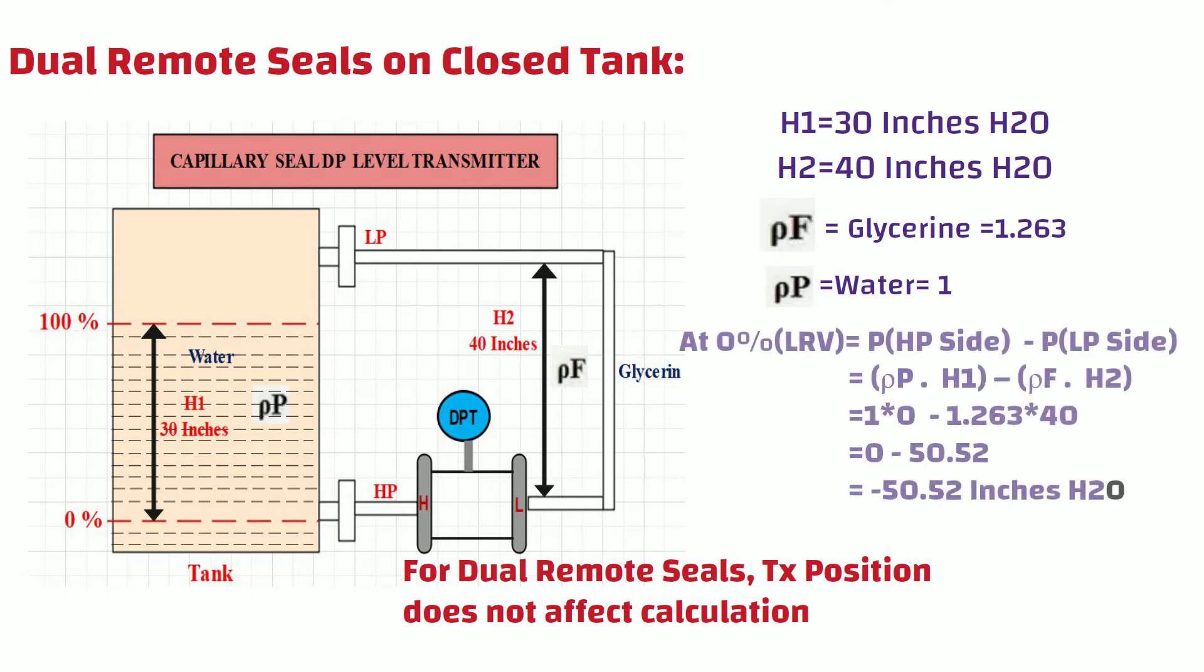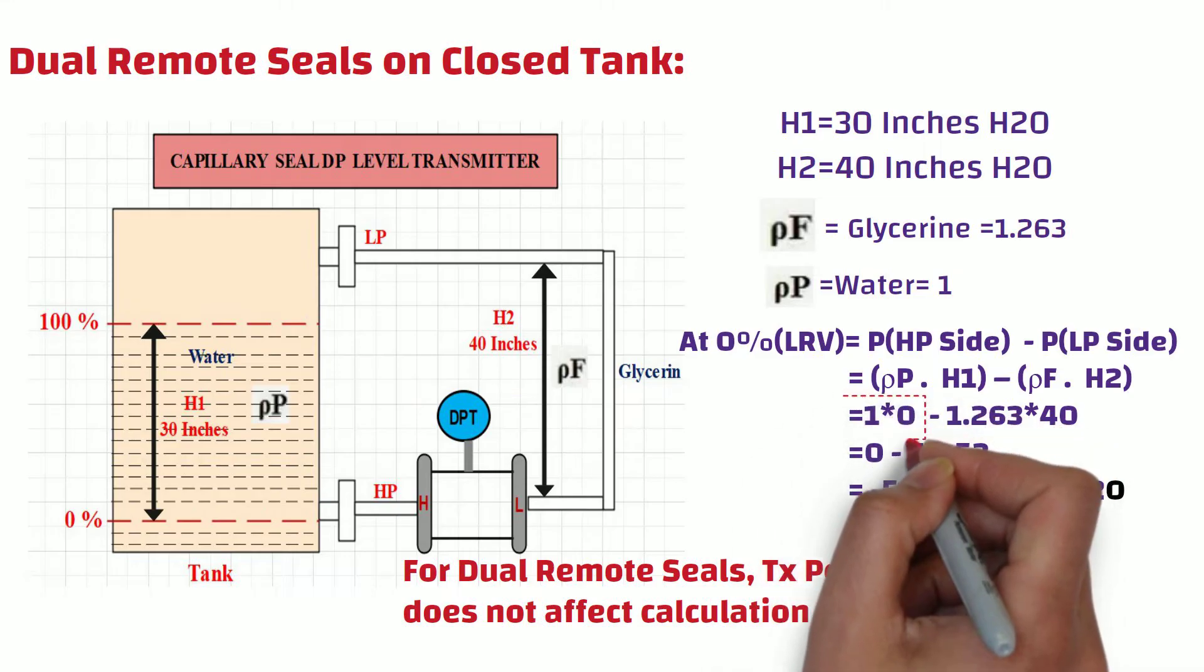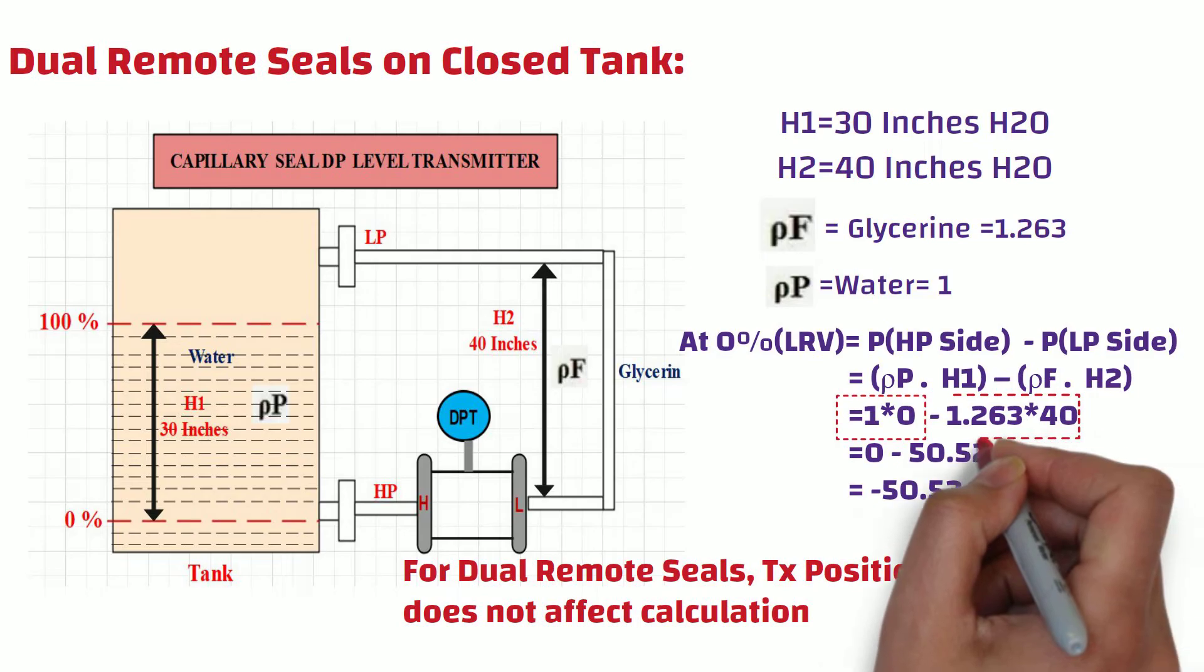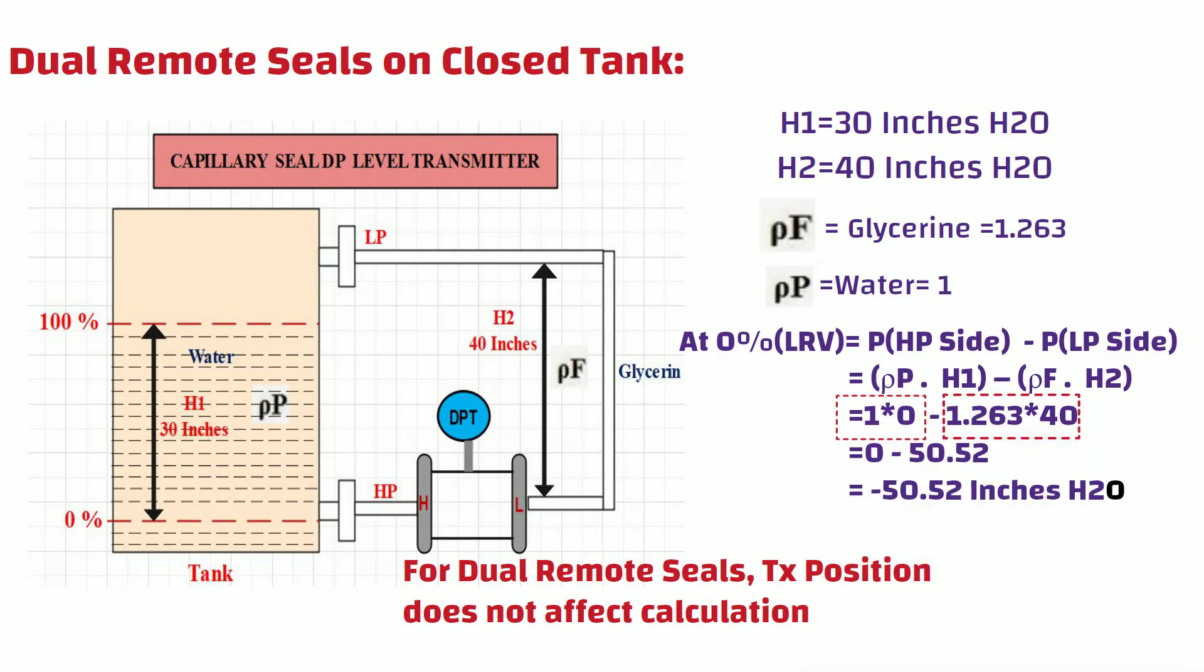So at 0% or at minimum level, the DP transmitter high side has 0 inches H2O pressure, which is multiplied with the specific gravity of water, which gives 0 inches H2O. At the same time, the DP transmitter low side port has 40 inches H2O pressure, which multiplies with the specific gravity of glycerin. In this case, the differential pressure is minus 50.52 inches H2O at 0% level or at minimum level. And this is our lower range value in this example.